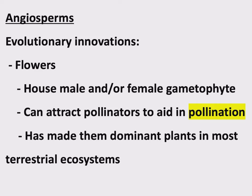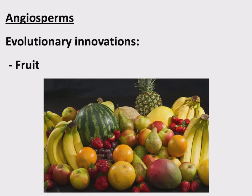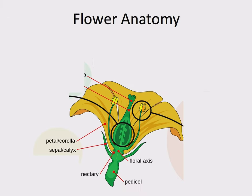The other evolutionary innovation is fruit — also coming in all sorts of shapes and sizes. Despite many being sweet and juicy, as we'll see in later chapters, fruit doesn't have to be delicious or fleshy. Fruit is a structure we see in angiosperms that we don't see in any other plants. Let's get into a little more detail with flower anatomy.